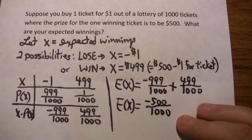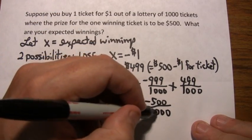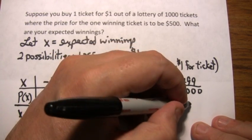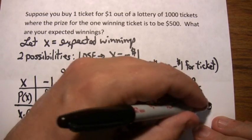500 out of 1,000 is a half. So it's negative a half, but you don't have to know that. If you take negative 500 on your calculator and divide it by 1,000, you'll come out with negative 0.50 dollars.